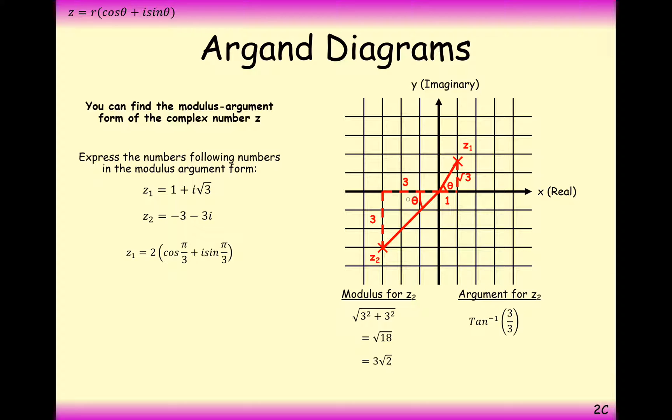The argument for this complex number here is worked out in a very difficult way. First, we need to do tan minus 1 of 3 over 3 to get the inside angle on this triangle here. But then we need to do the negative of pi minus this angle because it's on the bottom and because we need to measure it from the real positive axis. So we actually want minus 3 pi over 4.